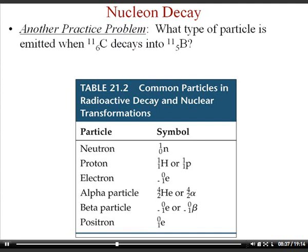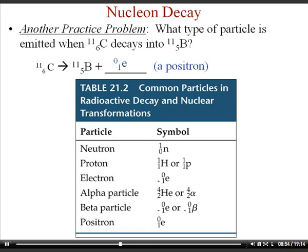Practice problem: What particle is emitted when carbon-11 decays into boron-11? Writing the reaction, carbon-11 on the left and boron-11 on the right, the missing particle must have a mass number of zero and a charge of +1. That's a positron, so this is positron emission.